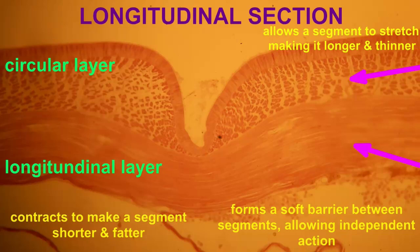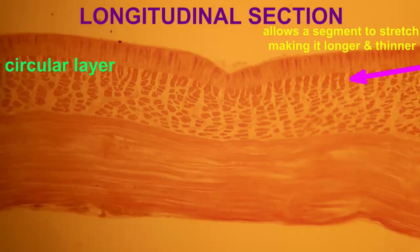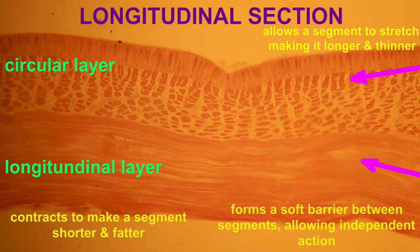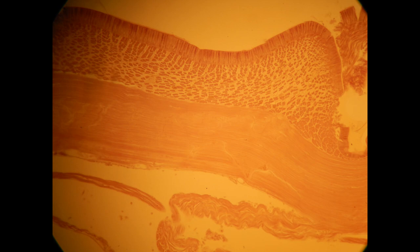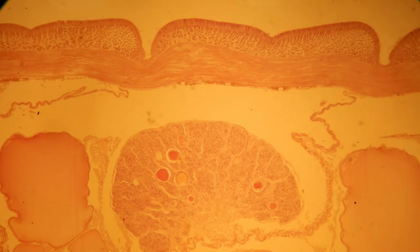In these first images of longitudinal sections — which run the length of the earthworm's body creating left and right halves — one can see the circular muscles in cross-section as they go around each segment, while the longitudinal muscles underneath can be seen going along the length of a segment.